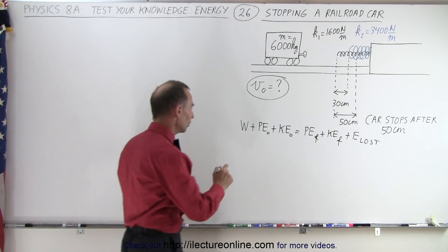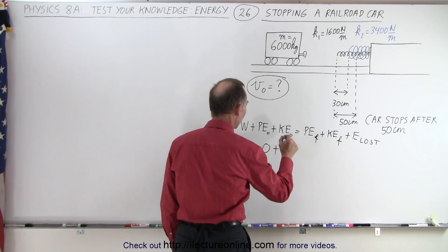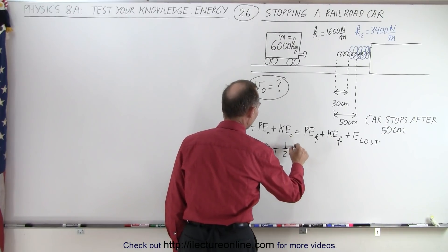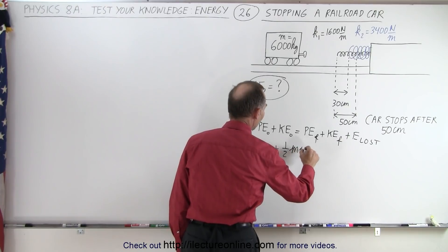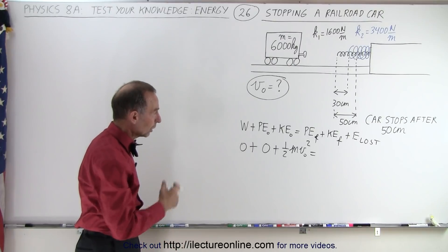Any work put into the system? No, we don't. Zero work. Potential energy initial? No, the car is just rolling, but it does have kinetic energy: one half m v initial squared. So that would be the initial energy of the system, the rolling car.